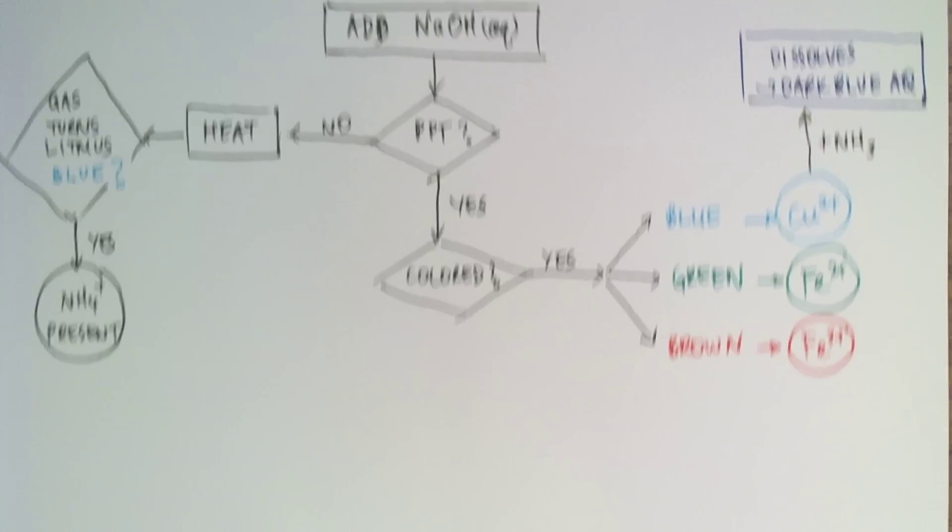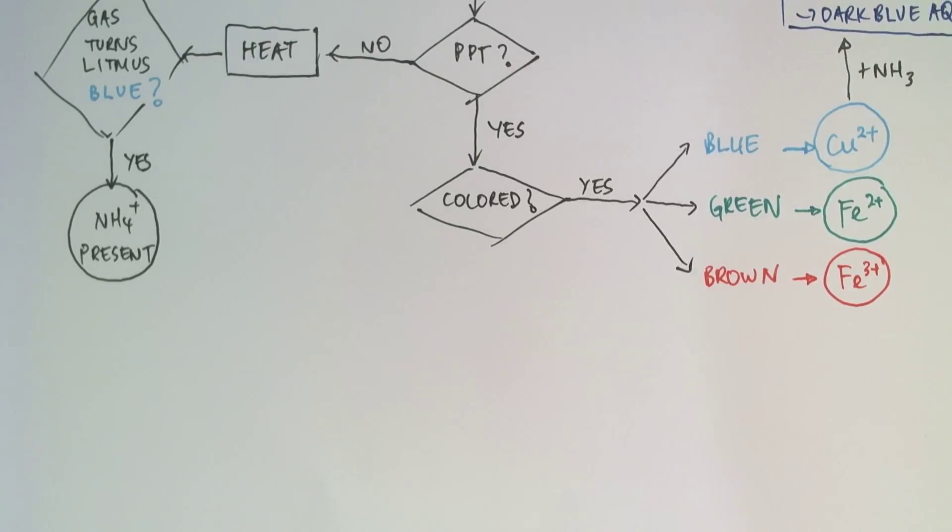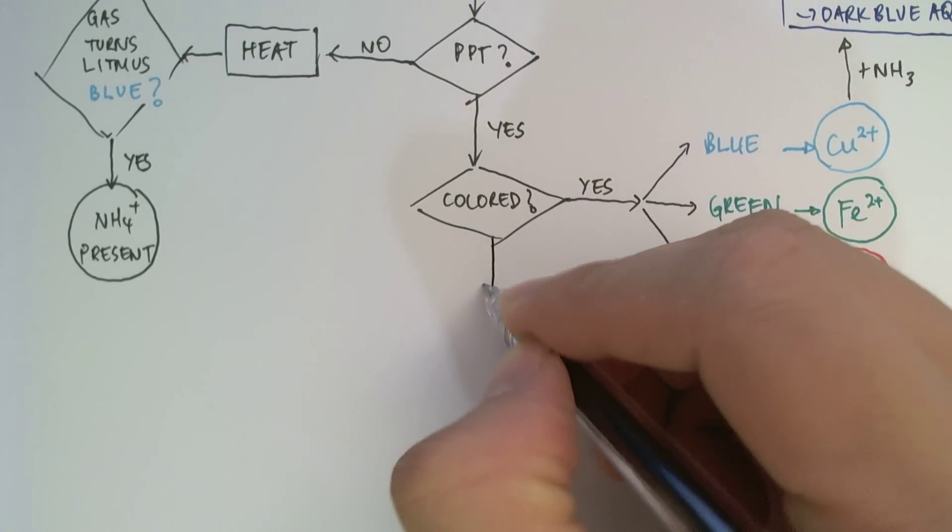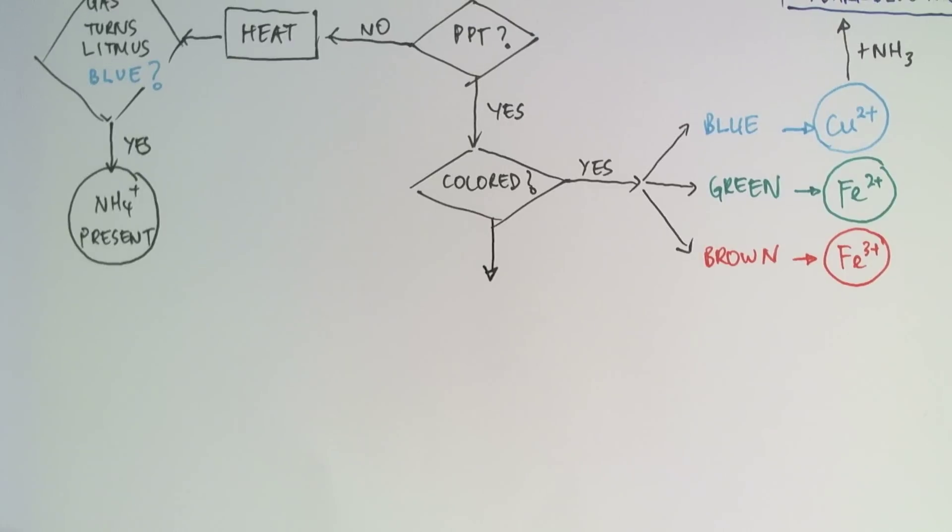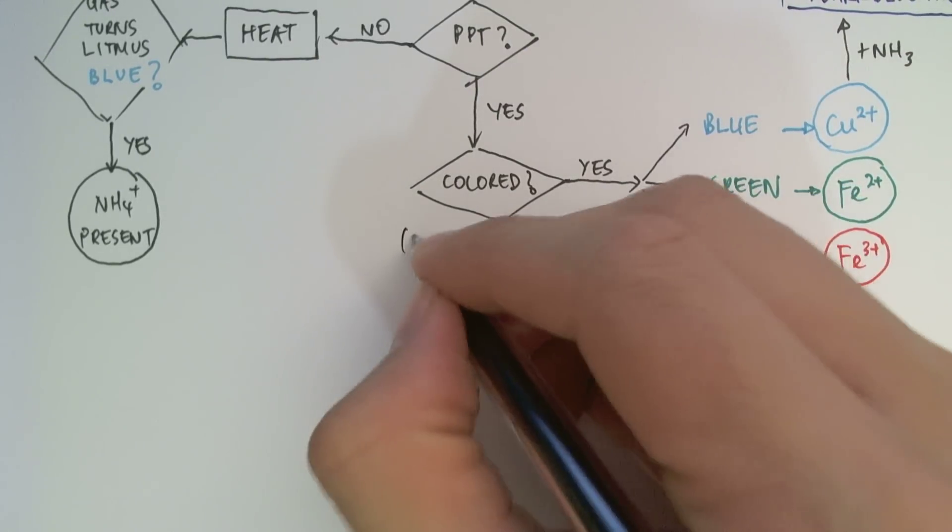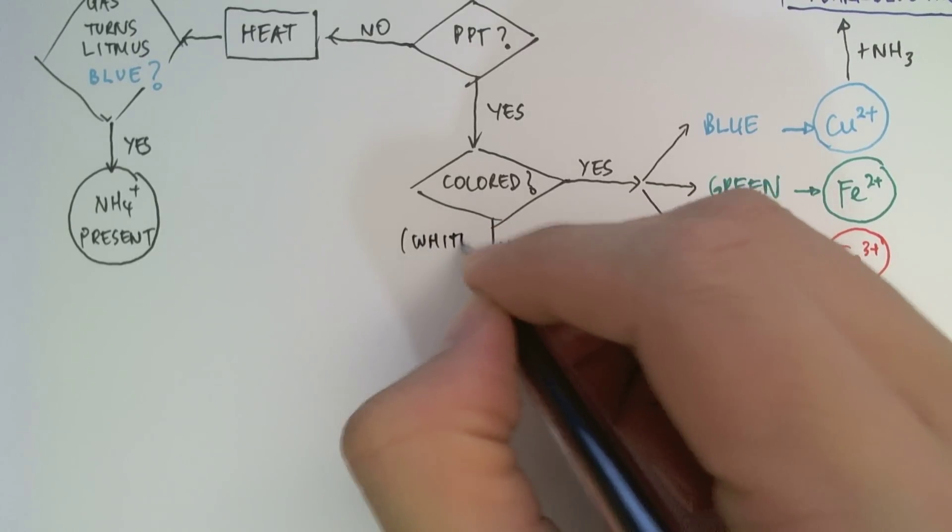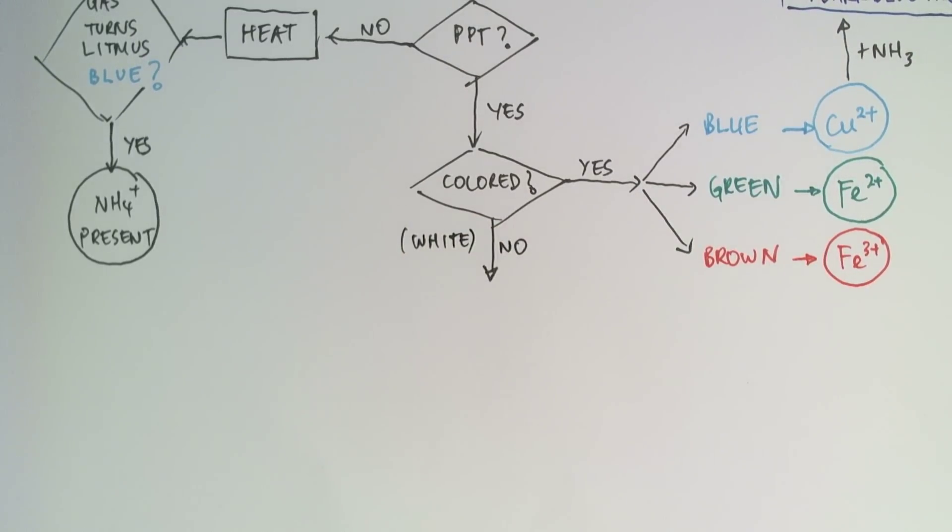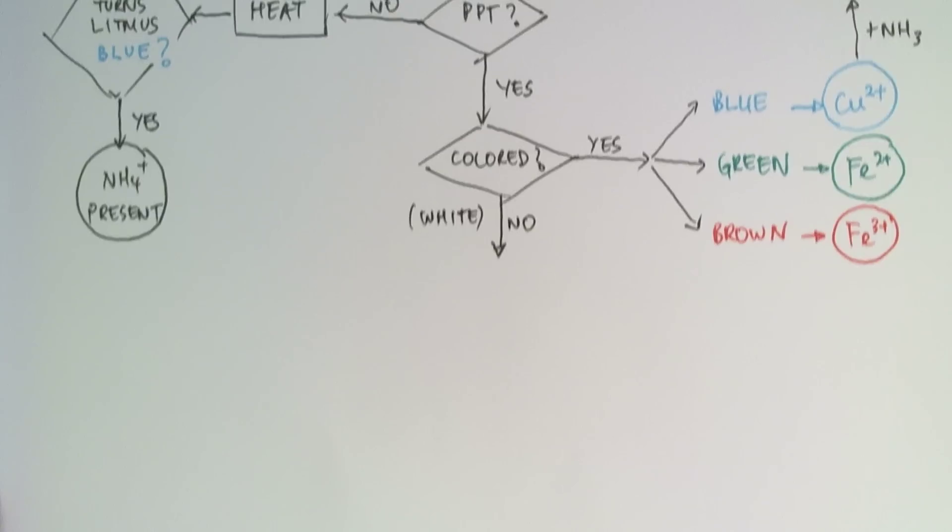Now, the other possibility from this branch is that it's not colored, namely it's white. So if it's white, then there exists three possibilities. Three ions that give it as white.